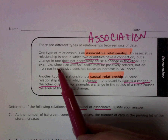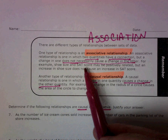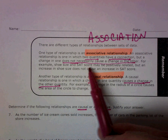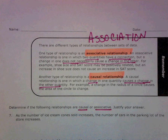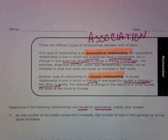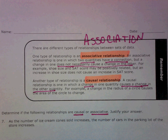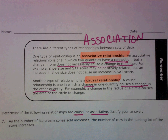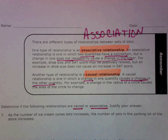Another example would be your shoe size and your SAT score. There's going to be a positive relationship because, obviously, the older you are, the bigger your foot is going to be and the smarter you're going to be. So, if your foot size goes up and your shoe size goes up, your SAT score is going to go up. But obviously, your shoe size does not cause your SAT score.